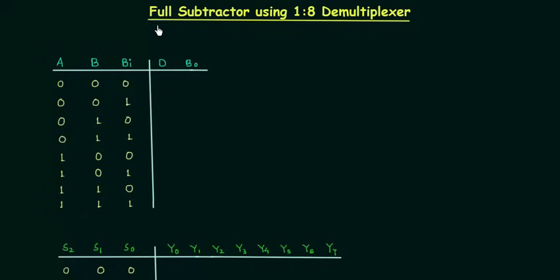In this lecture we will try to implement a full subtractor using a 1-to-8 demultiplexer. First we will find out the difference and borrow output, then we will move to implementation using a 1-to-8 demux.